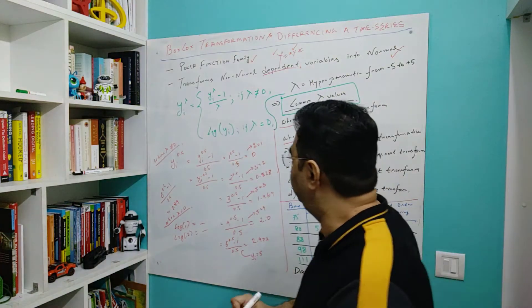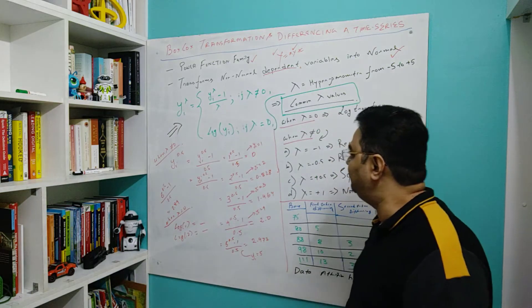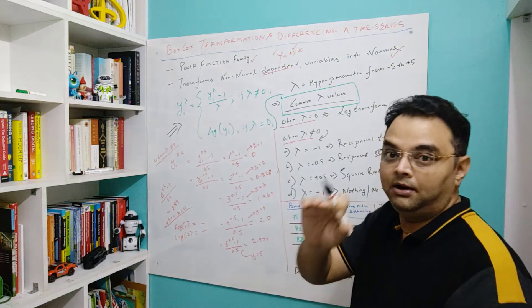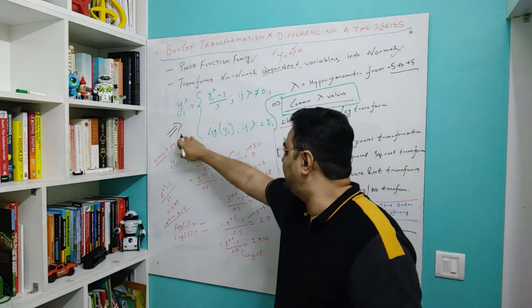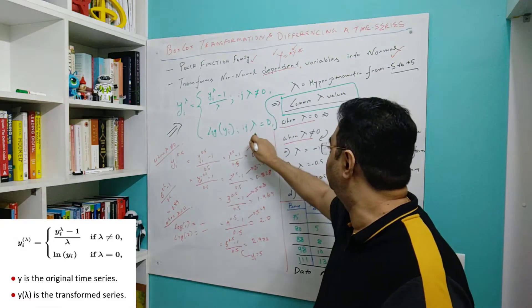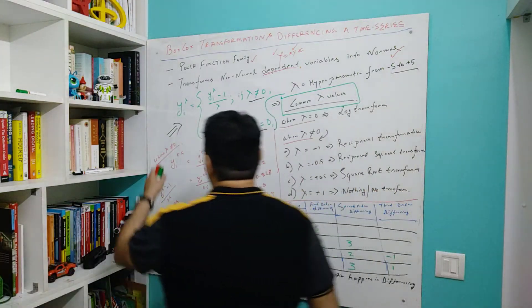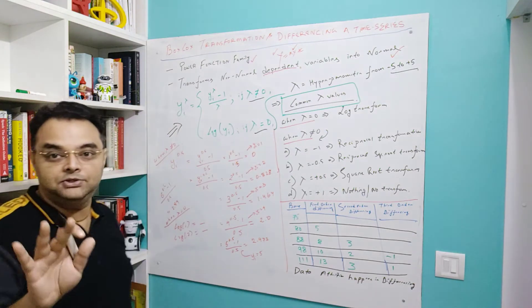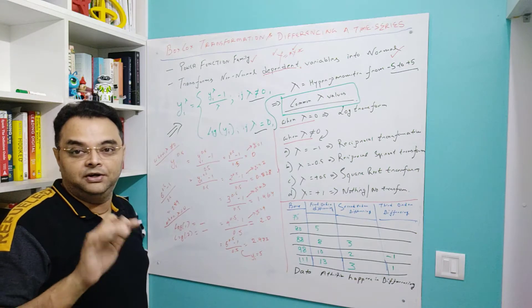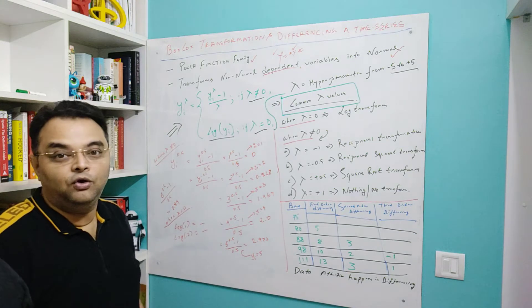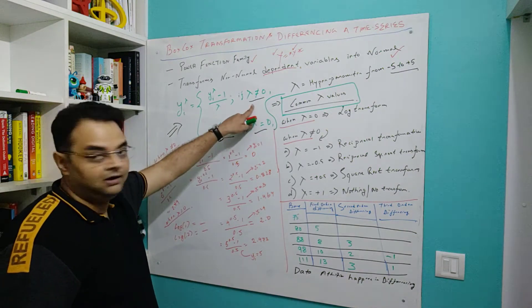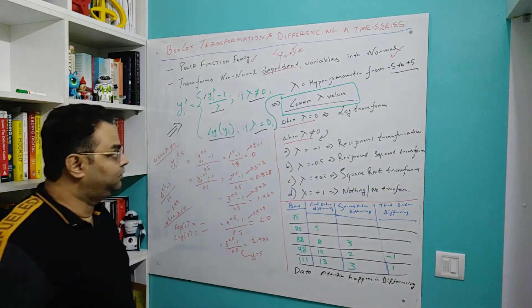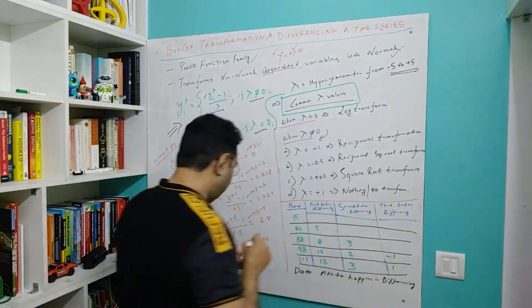The formula changes based on a lambda value, which ranges from minus 5 to positive 5. The function is defined in two cases: when lambda equals 0 and when lambda does not equal 0. When lambda equals 0, y^λ is defined as log(y) — so the function always converts the input to its log value. When lambda is not equal to 0, the formula is (y^λ - 1) / λ.